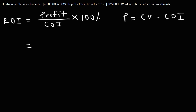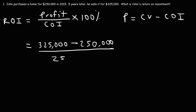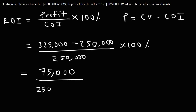So let's calculate the profit first. He sells the home for $325,000. He bought it for $250,000, so that's the cost of the investment, which we put on the bottom of the equation as well. And then we're going to multiply this by 100%. So $325,000 minus $250,000 gives us a profit of $75,000. So now let's divide that by $250,000 and multiply the result by 100%. The answer is 30%.